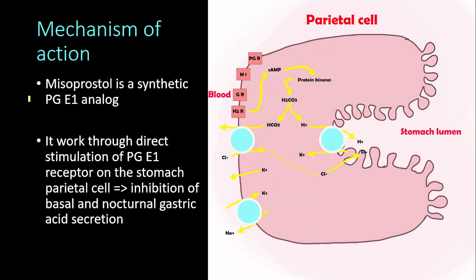Misoprostol is a synthetic prostaglandin E1 analog, and it works through direct stimulation of prostaglandin E1 receptors on the stomach parietal cells. This leads to inhibition of the basal and nocturnal gastric acid secretion.